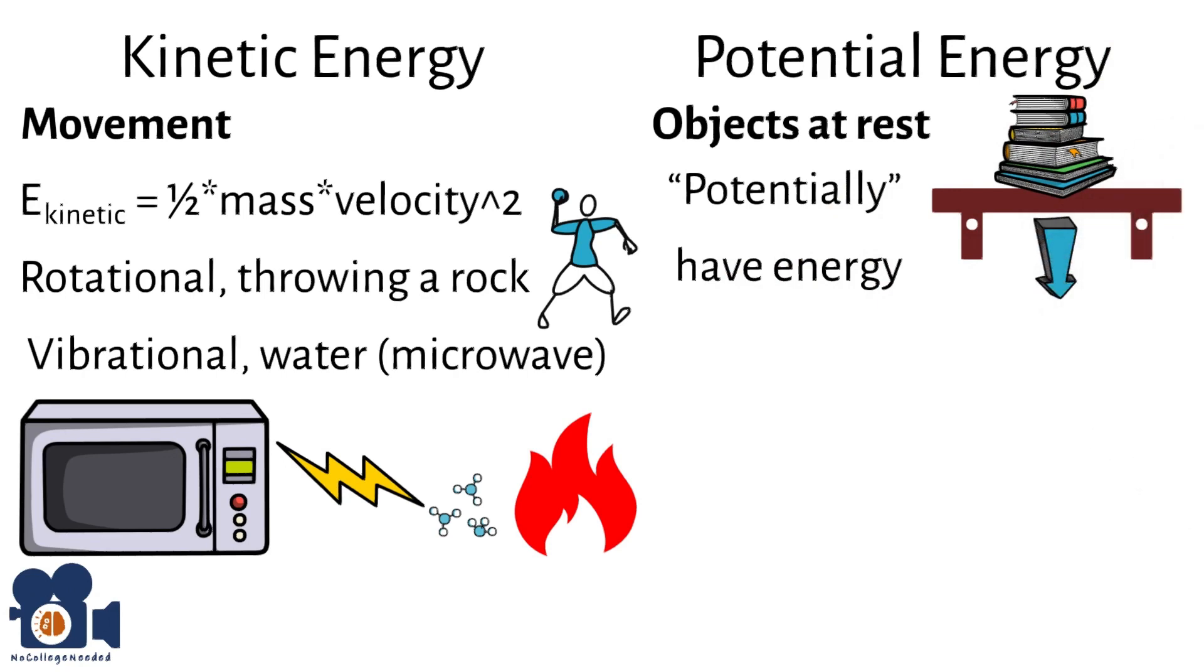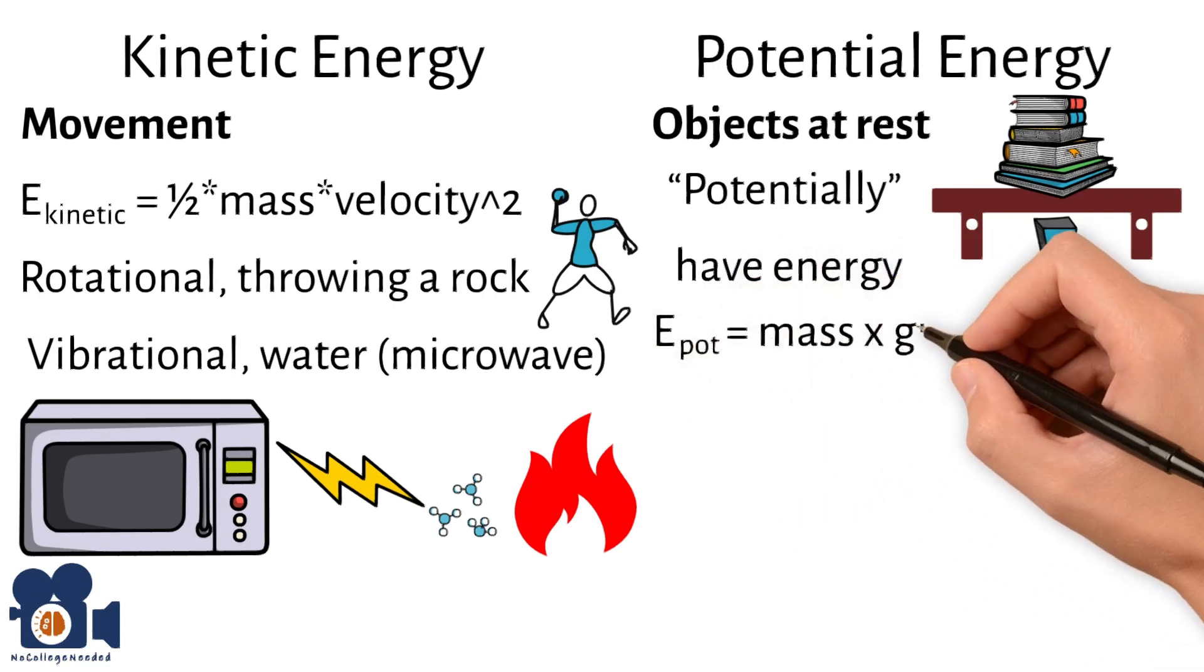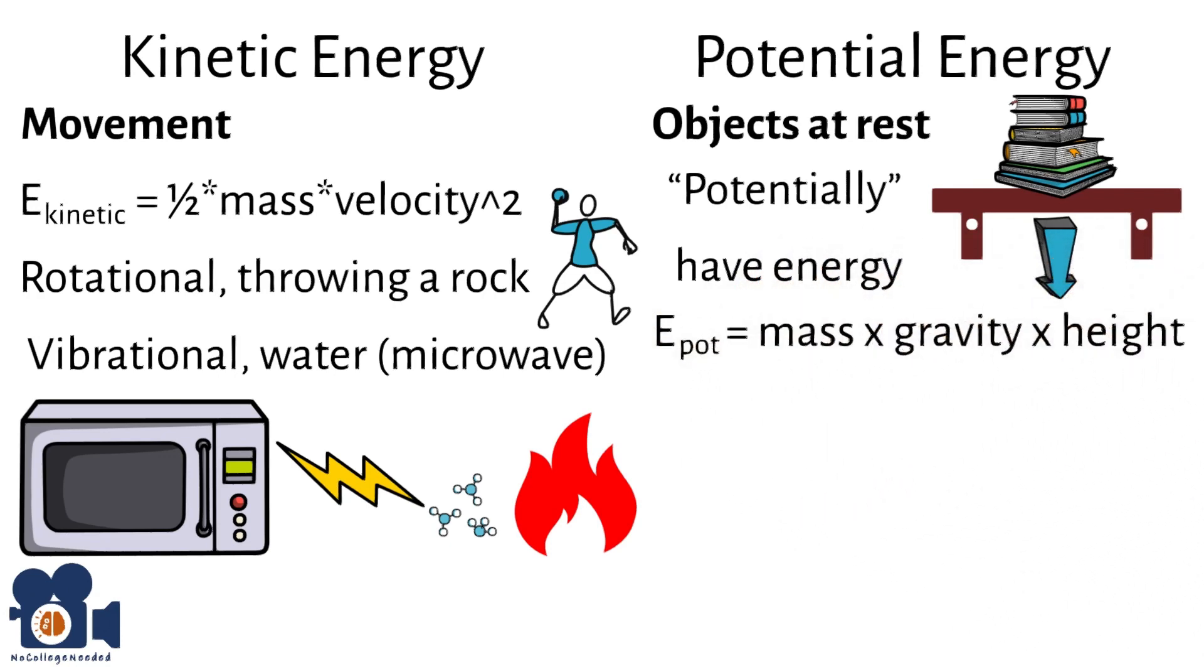There are two main equations relating potential energy. The first is E potential equals mass times gravity times height. Hopefully that one is pretty straightforward.